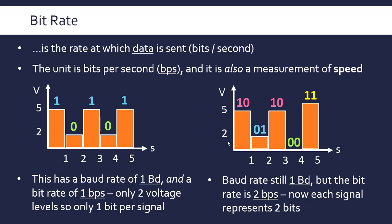Each pulse is now representing two bits because we've got more voltage levels. You can work out the bit rate given the baud rate and how many bits are encoded: it's just the baud rate, one in this case, multiplied by the number of bits, two in this case.